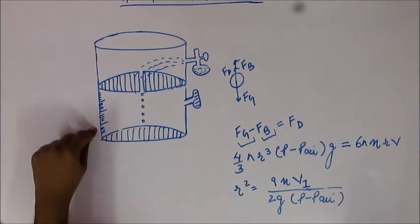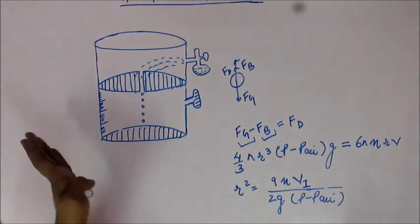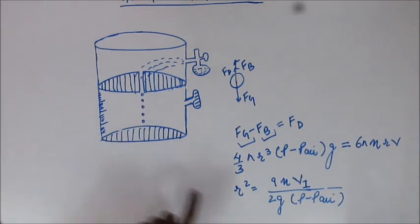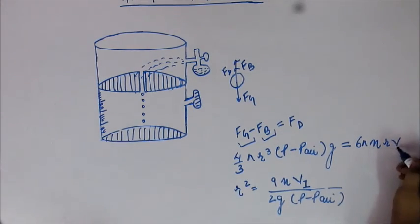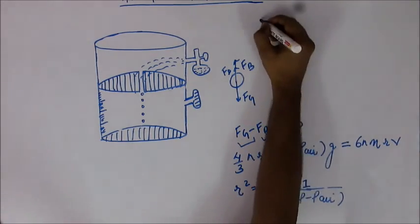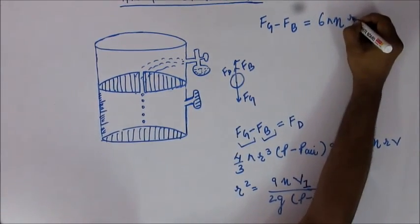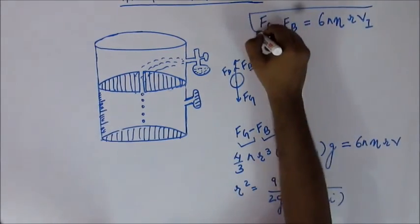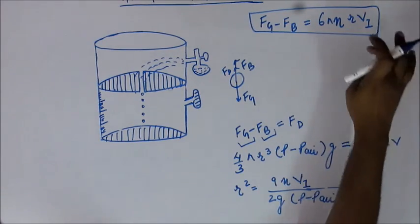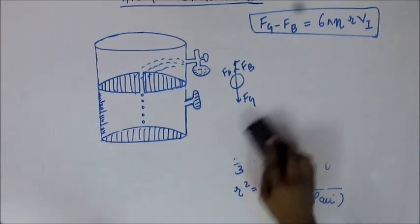It is a tedious process, but in 1906 it was the straightforward method, and that is how Millikan did it. Once you have the velocity v1 and the radius r, you know the drag force, and hence Fg minus Fb. For reference: Fg − Fb = 6πηr × v1. The radius r and velocity v1 are determined in this phase. Fg minus Fb will remain the same even if the velocity changes later — this completes the first part of the experiment.